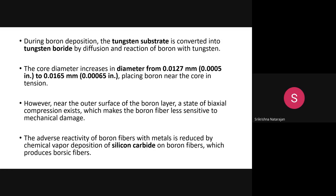Depending on how much the boron has diffused inside the tungsten, it will give good compressive resistance. If boron is only deposited on the surface and has not diffused inside, the fiber will be more sensitive to damage and the boron may come out. Proper temperature, pulling speed, vacuum maintenance, and reactant concentration must be controlled to get good compressive resistance.